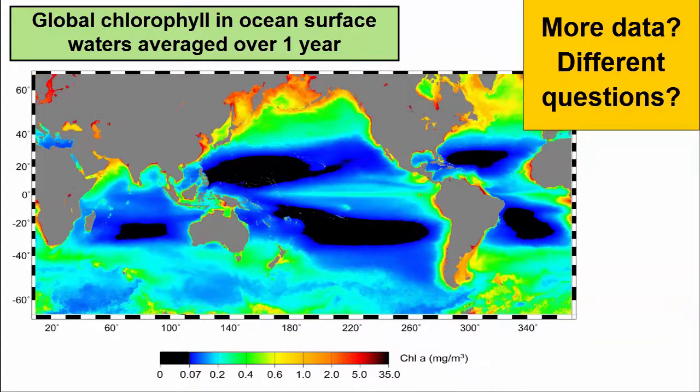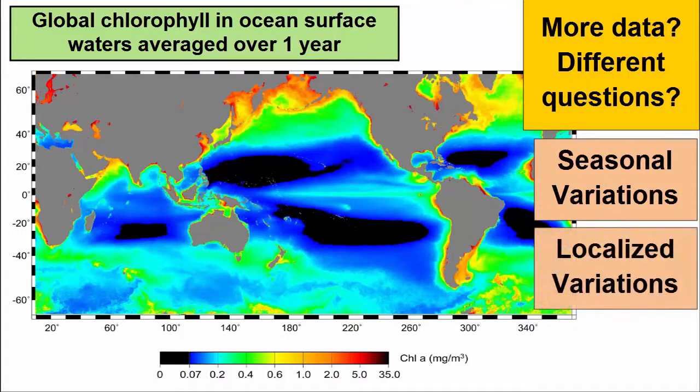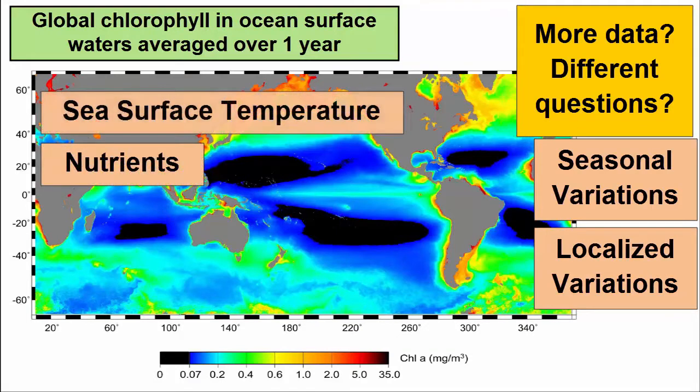Are there more data we'd like to collect? Questions we'd like to ask? If so, what? For example, in the chlorophyll map, we might ask to look at the data by season, or look at a small area in more detail. We might want to see some other datasets alongside, such as nutrient content and sea surface temperatures. These will allow us to confirm our original hypothesis or transform it into something that fits the data better.